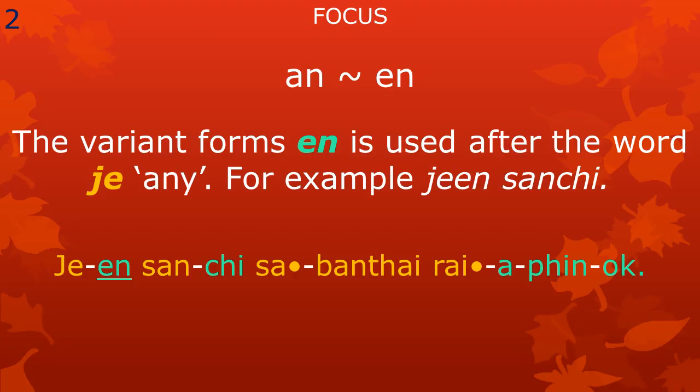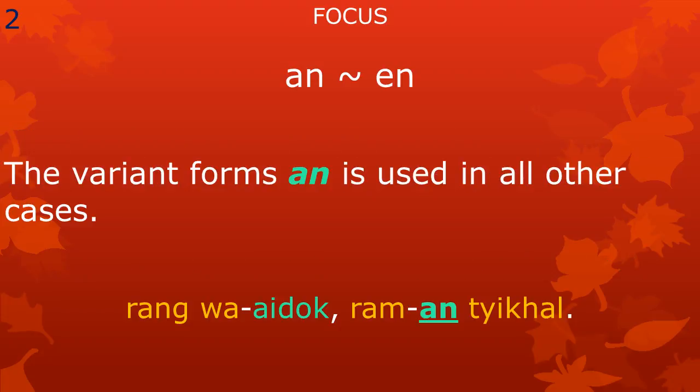The meaningful part indicating focus has two variant forms: an and en. The variant form en is used after the word j, meaning 'any,' as in the expression j en san chi. We can use it in a sentence like this: J en san chi sa ban tai raya pinok. The variant form an of the focus meaningful part is used in all other cases, for example, in the word raman.